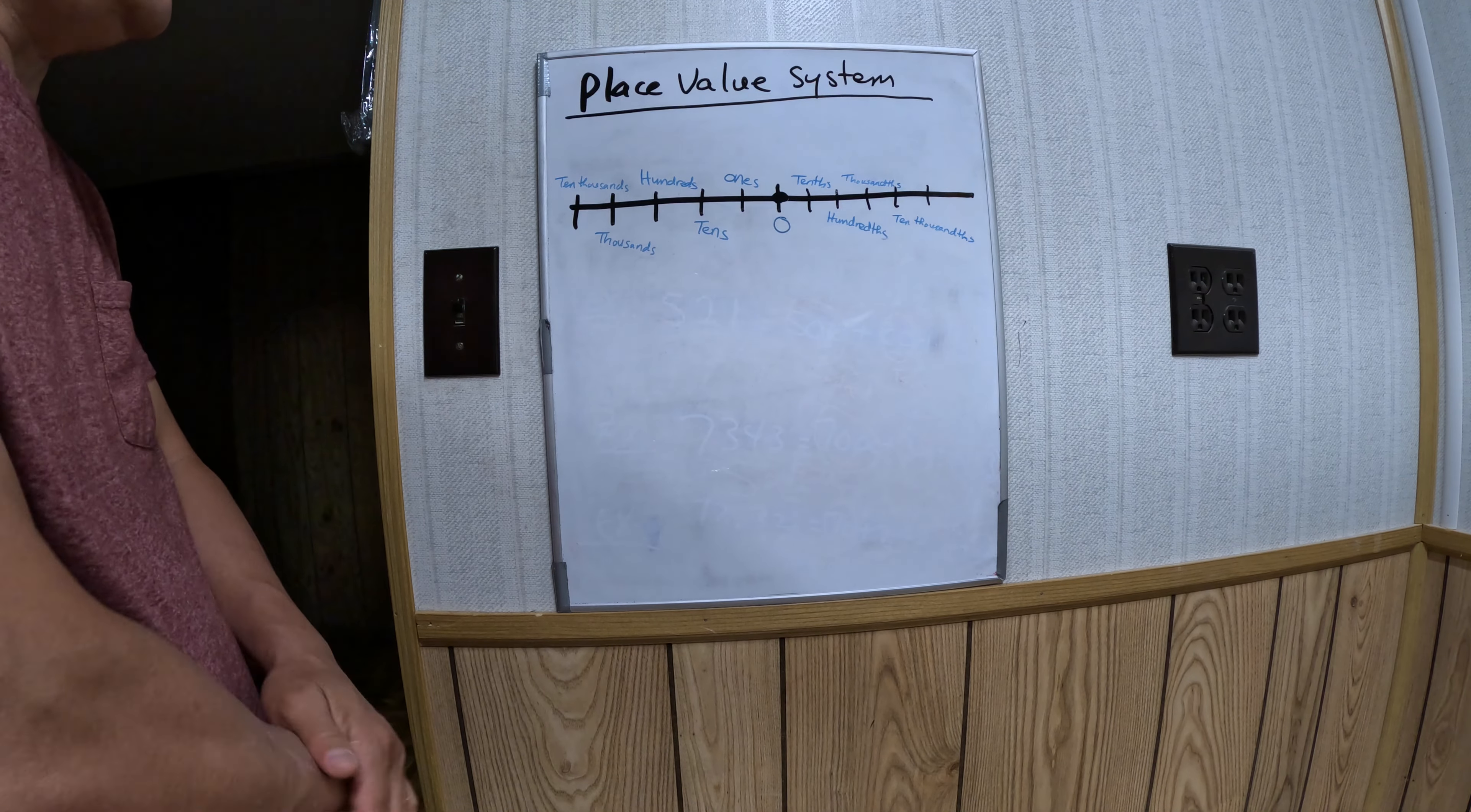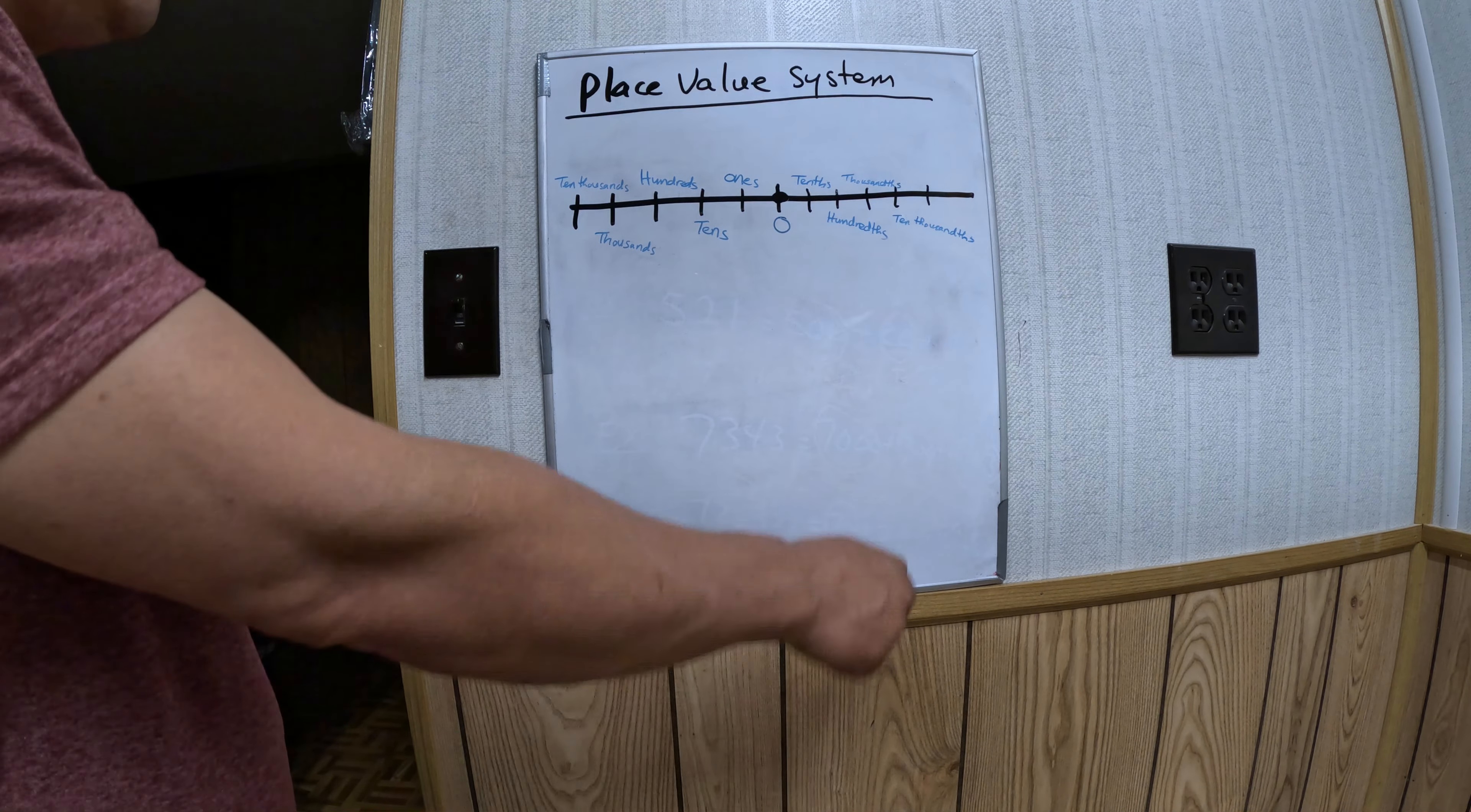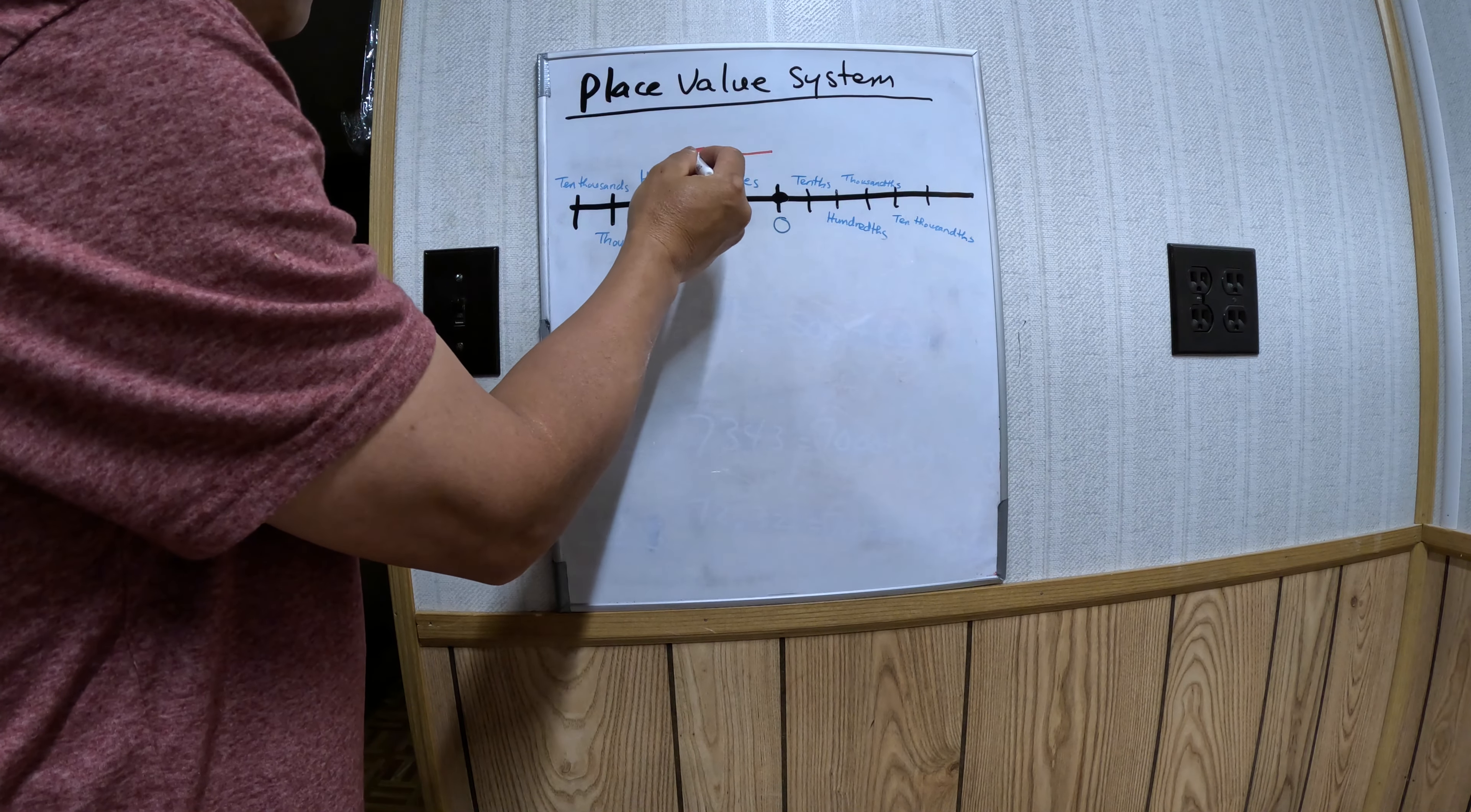Hello, welcome to my math channel. Today we're going to understand the place value system. I have here a place value chart. Starting with zero right here, positions extend from the left of zero to the right.